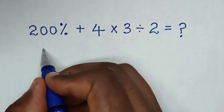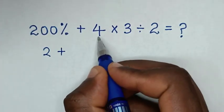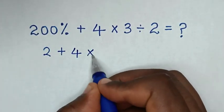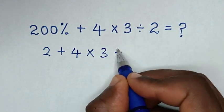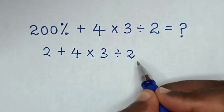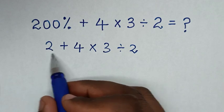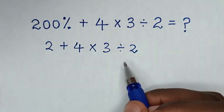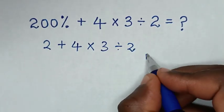Then plus this 4, then times 3 divided by 2. Then from these operations we will solve by using BODMAS rule.